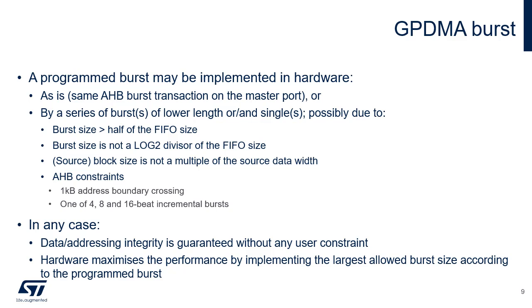If the source or destination burst length exceeds 16 on an AHB transfer, the GPDMA modifies and shortens the programmed burst into singles or bursts of shorter length to be compliant with the AHB protocol. In all cases, the GPDMA ensures source and destination data and address integrity without any user constraint.